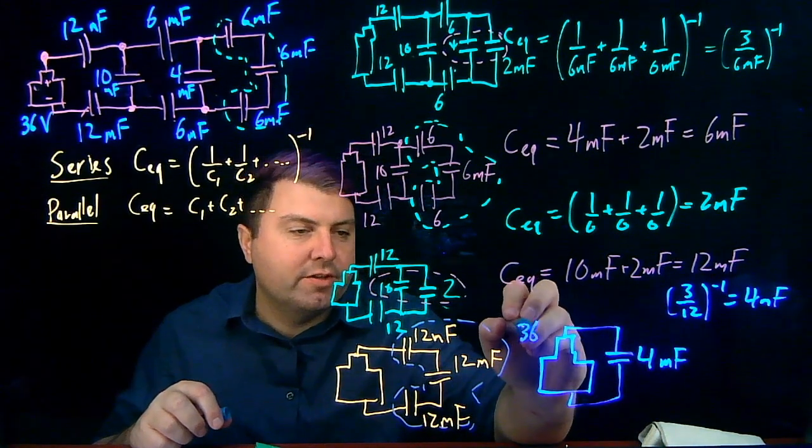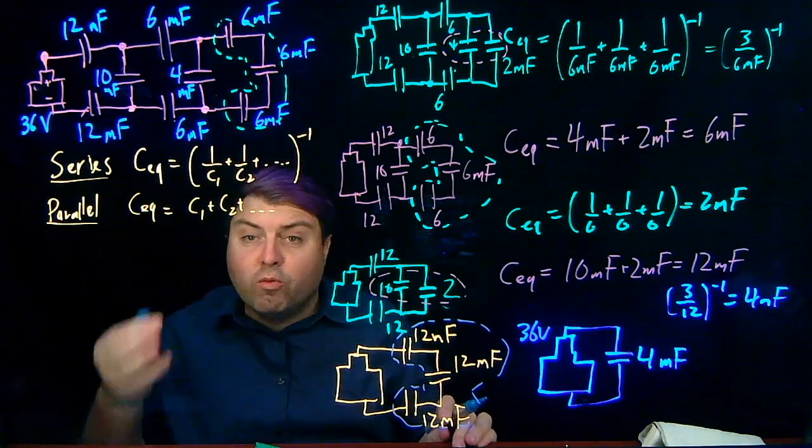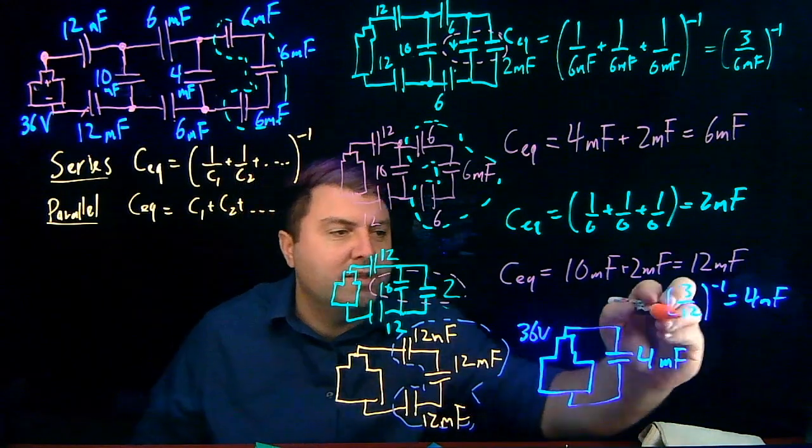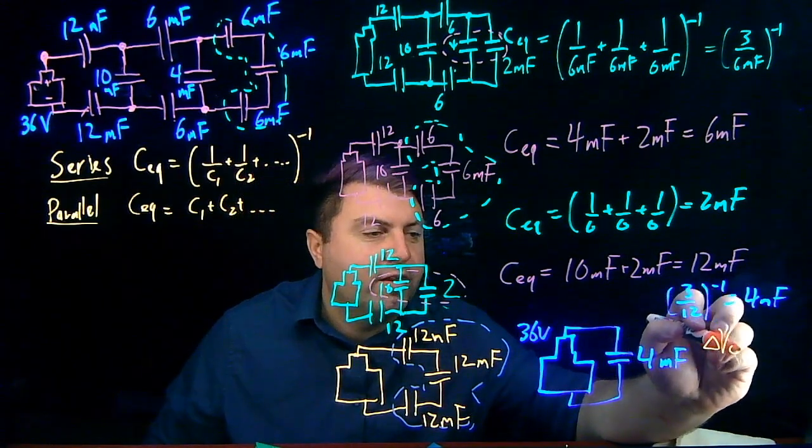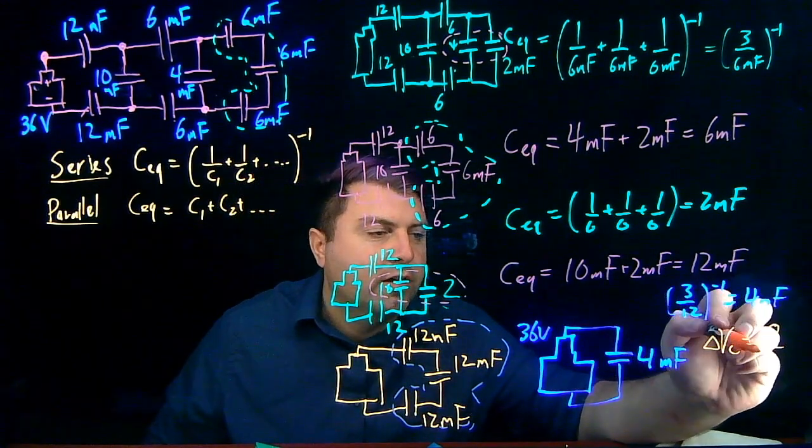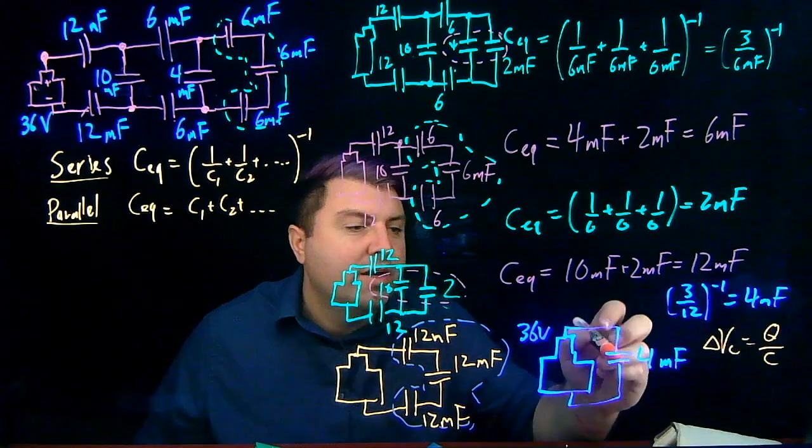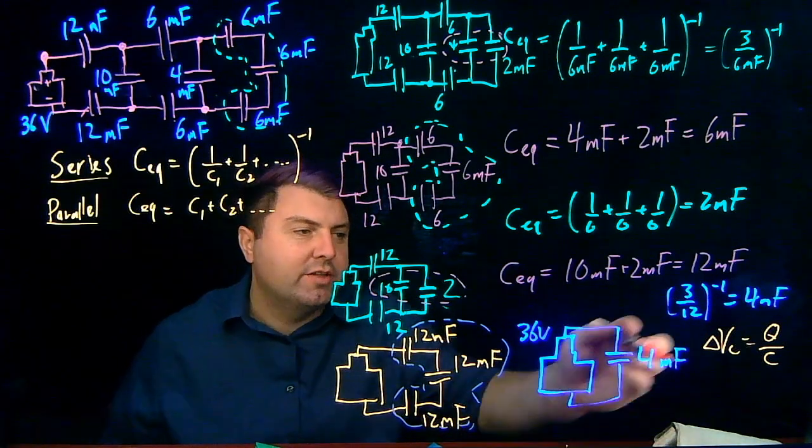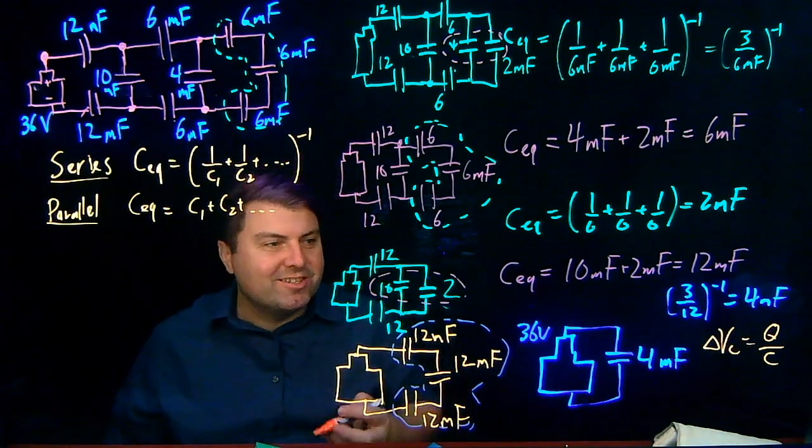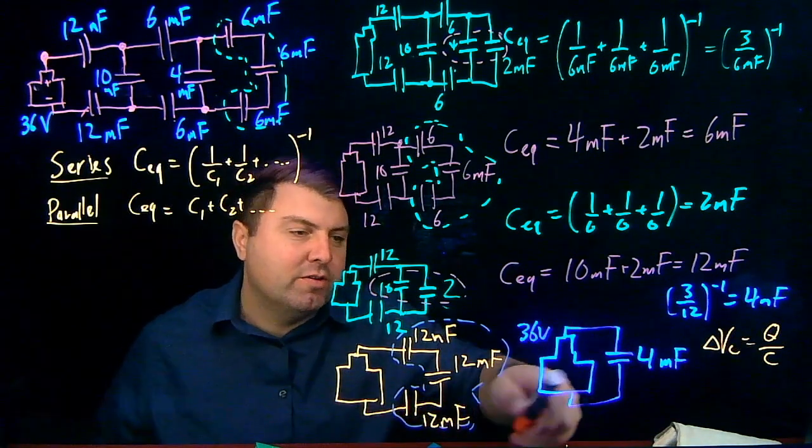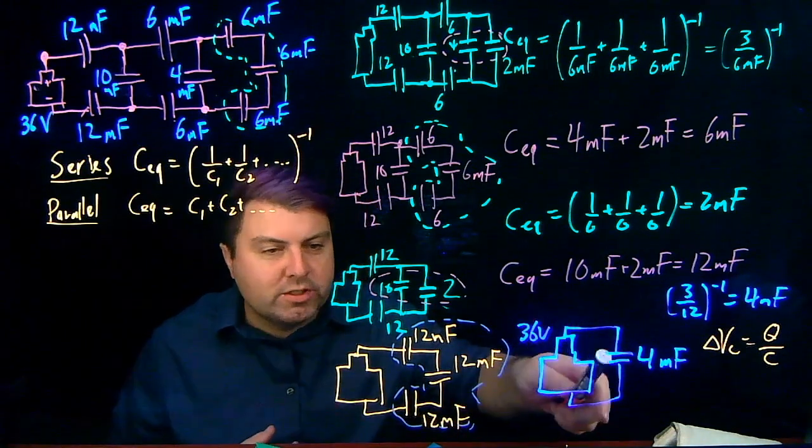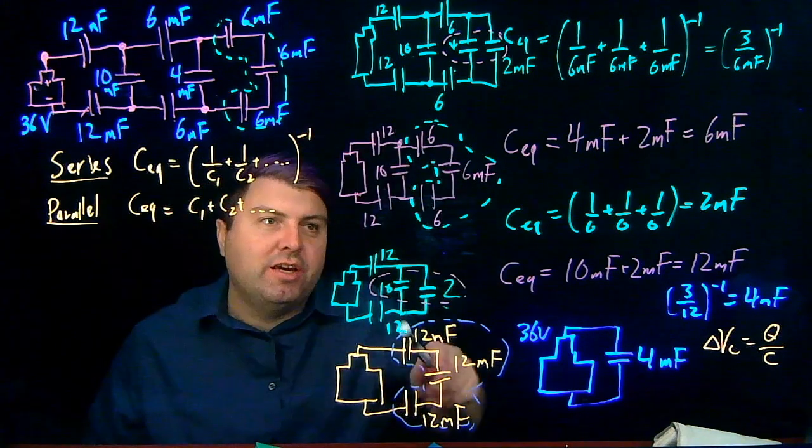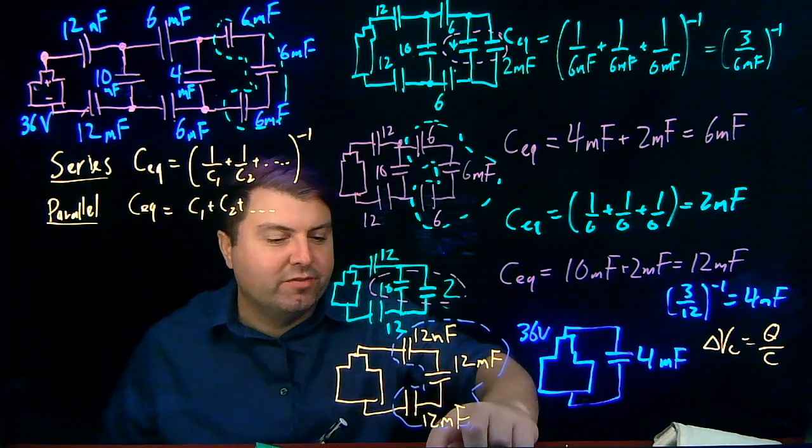And so then we can have 36 volts and 4 millifarads. Once we have this, then any sort of capacitor rules go really easily. We can say delta V of the capacitor equals Q over C. We know C of the entire thing is 4, so we can find that the charge is going to be 4 times 36, which is 108. Or we can do other math once we have this and then build back up with that. But this is just to show the series and parallel rules, and we'll do more in later videos.